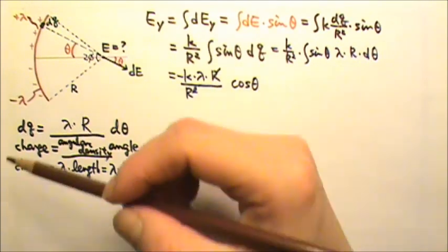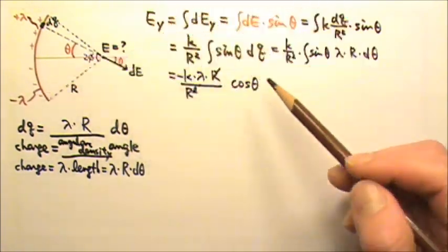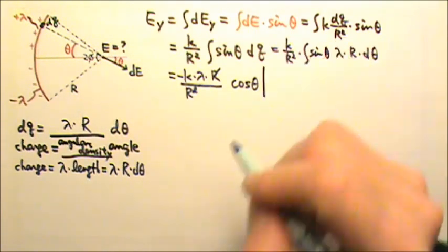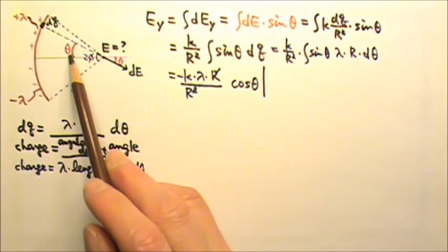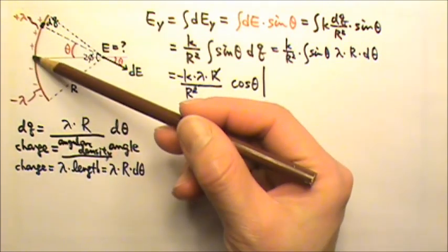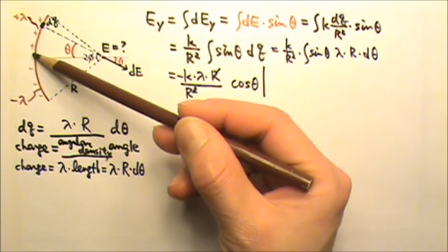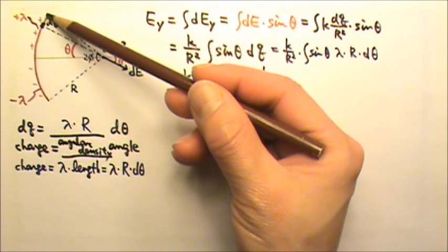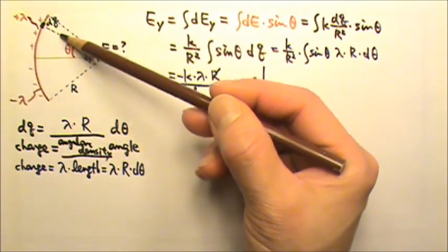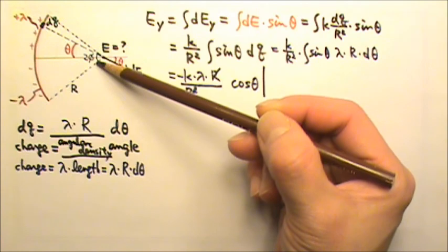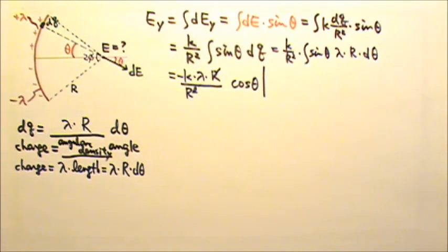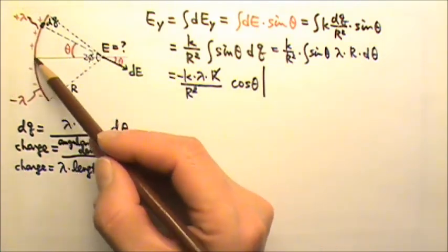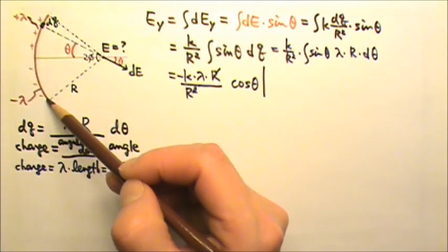We have to integrate for all the dQs on the arc. So we have to write the upper and lower limits. Since my angle θ is measured from the midpoint, I'm going to start with this dQ. If I go from here, that will be 0. For that little bit of dQ, the angle θ would be φ, half of the 2φ. So we will integrate from 0 to φ for this part. And then for this half, it will be also 0 and then 2φ.